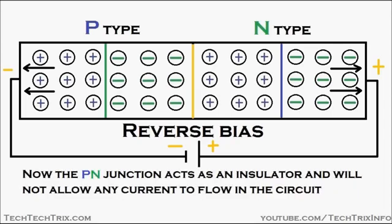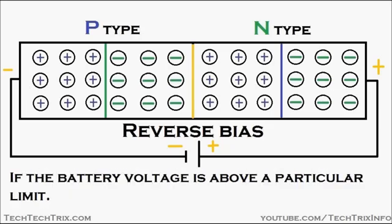Now the PN junction acts as an insulator and will not allow any current to flow in this circuit. This depletion layer acts as an insulator and will not allow the flow of electrons or holes in that region.